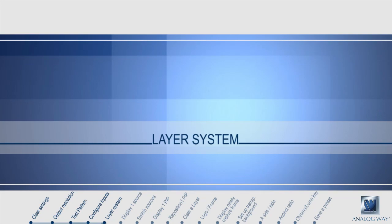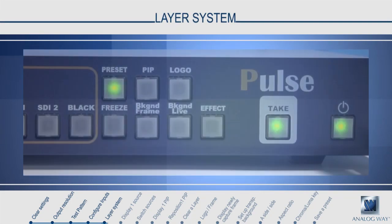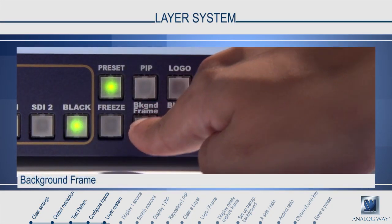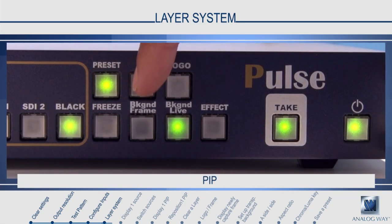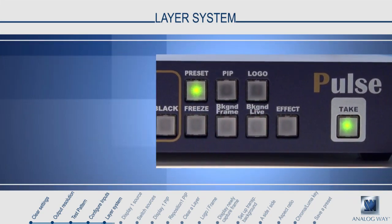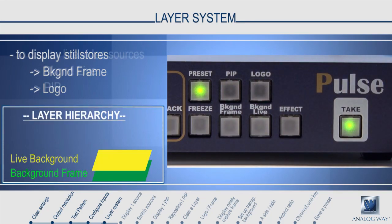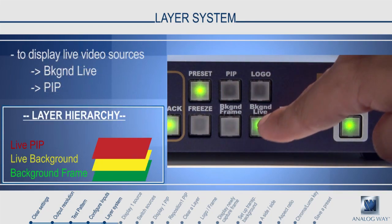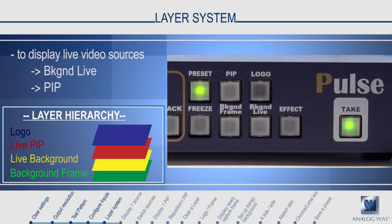The layer system. The Pulse has an intuitive layer system which features four layers. Background frame and logo can display still stores. Background live and PIP layers are used to display live video sources. The background frame layer is the bottom layer. On top of this are the background live and PIP layers, and on top of this is the logo layer. To see a layer beneath, make sure you have cleared or moved aside the layers above.